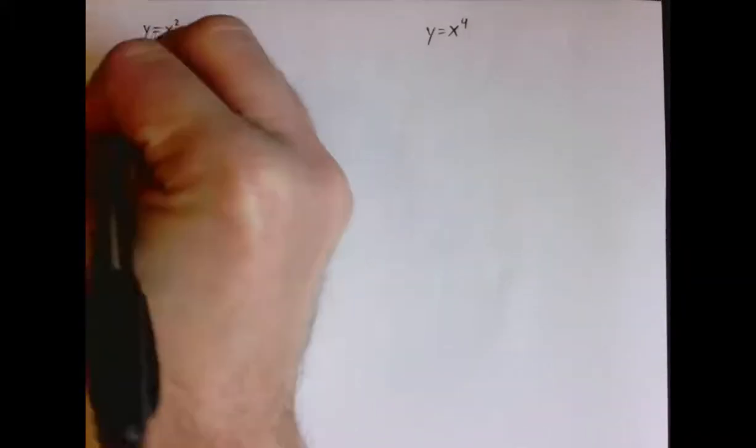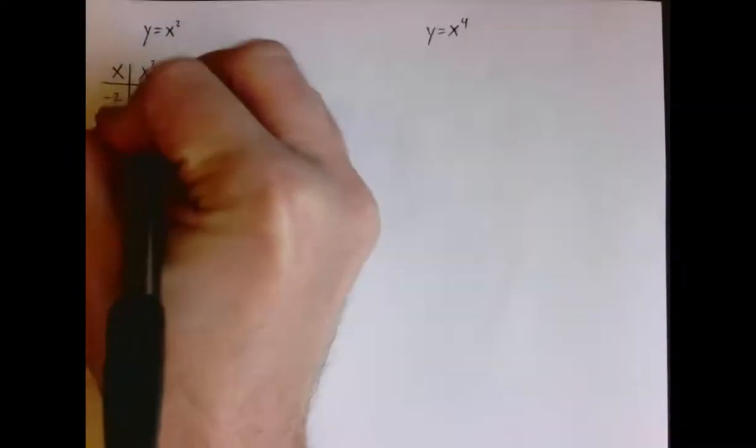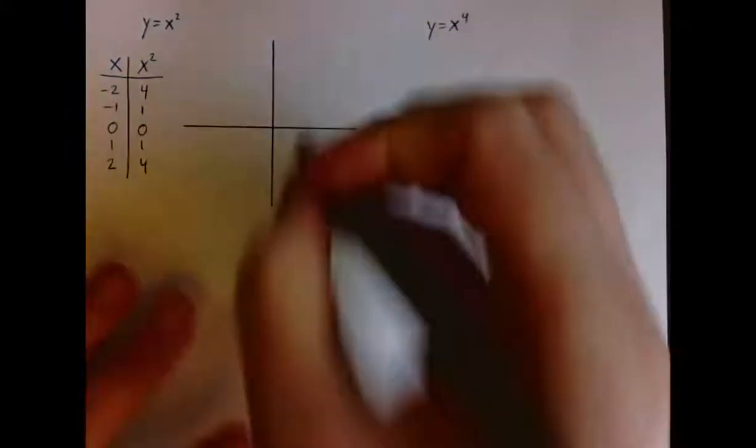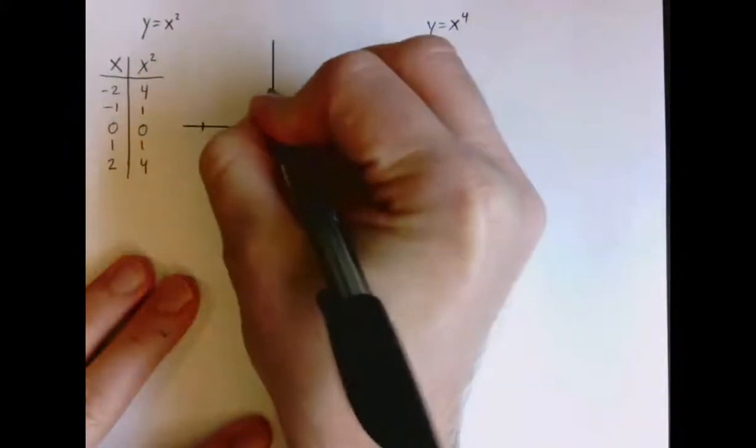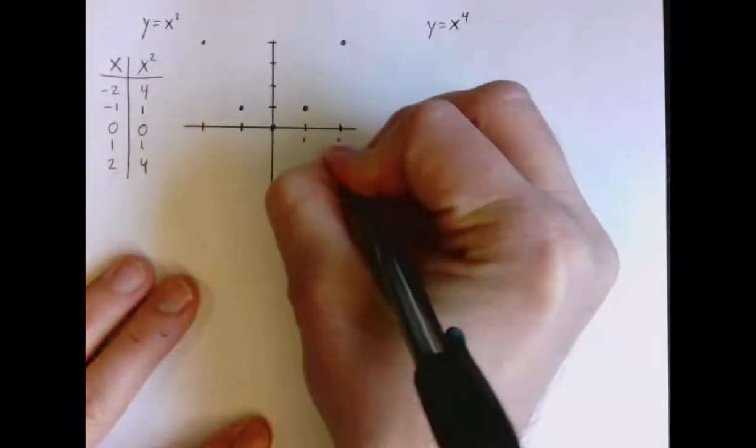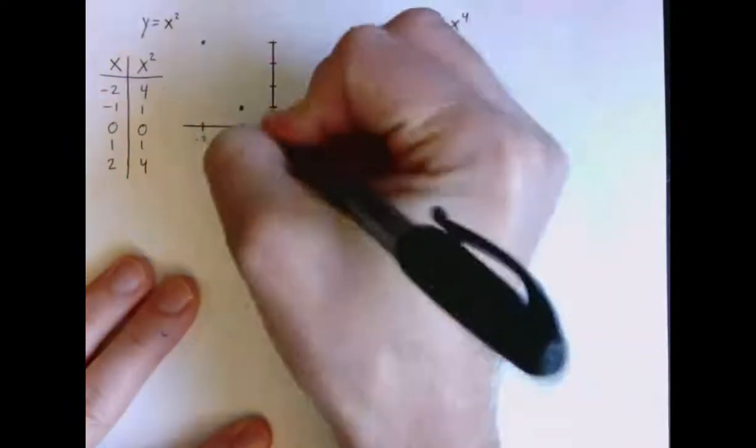That kind of imprecise understanding was probably fine for what you needed to use those functions for last year. But the difference between x squared and x to the fourth is actually there are a lot of differences, and they're pretty important depending on the kind of application that you want to use them for.